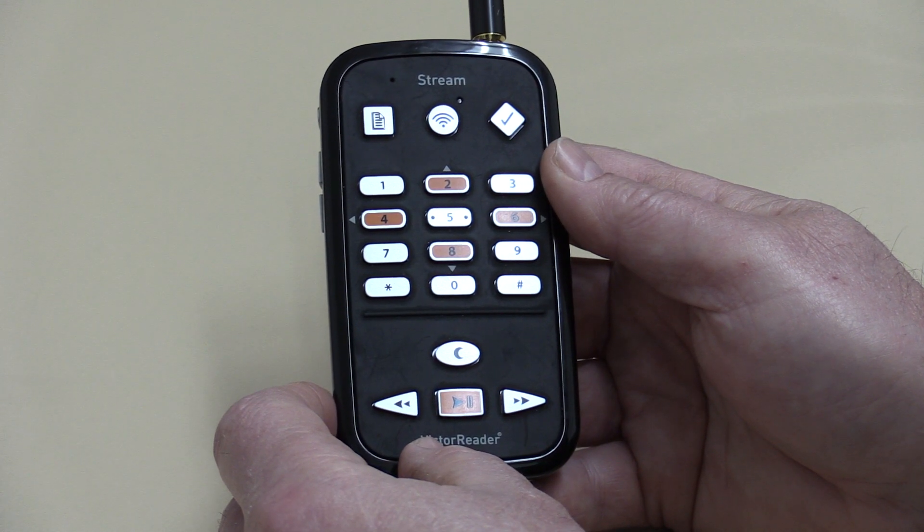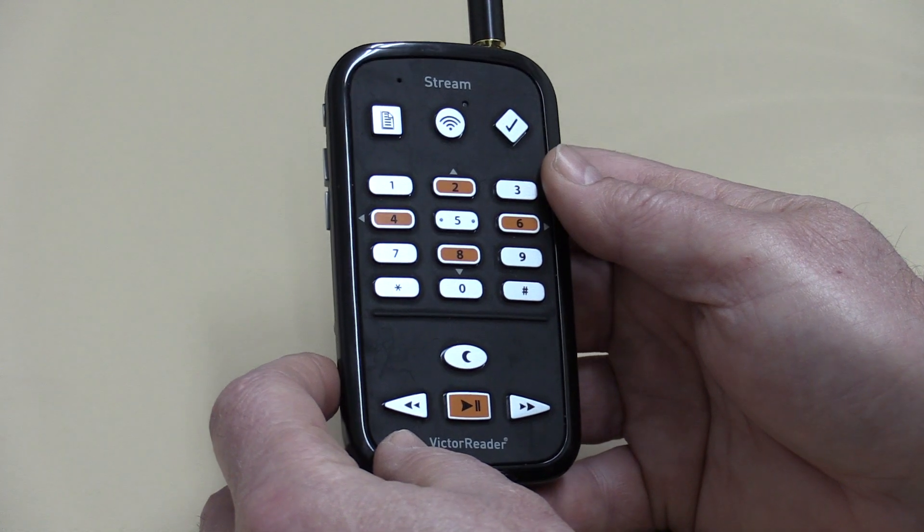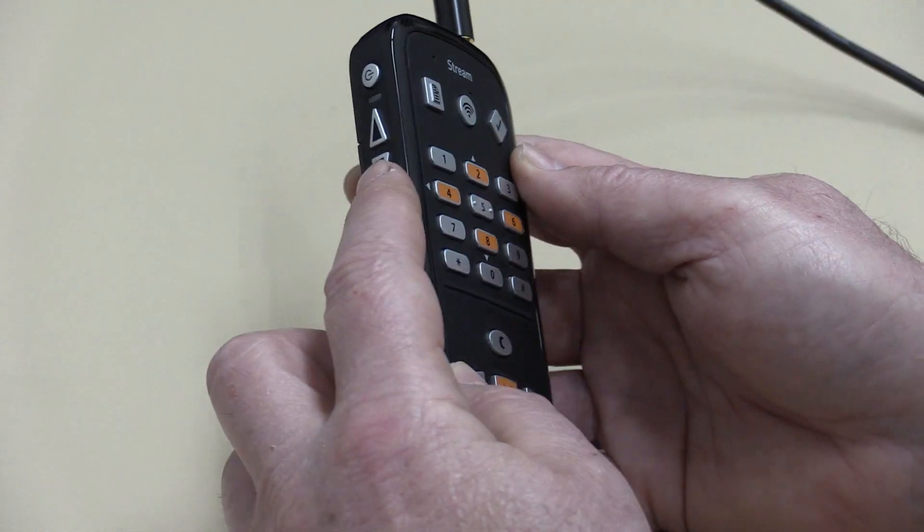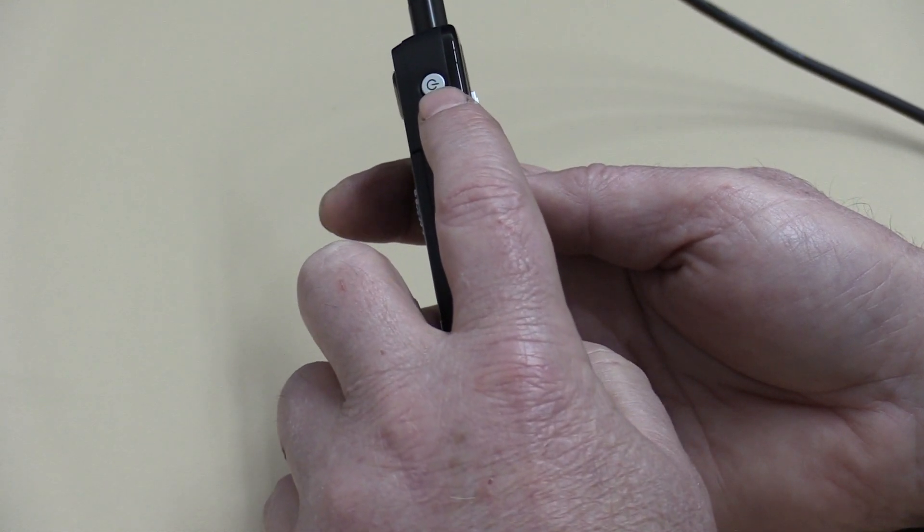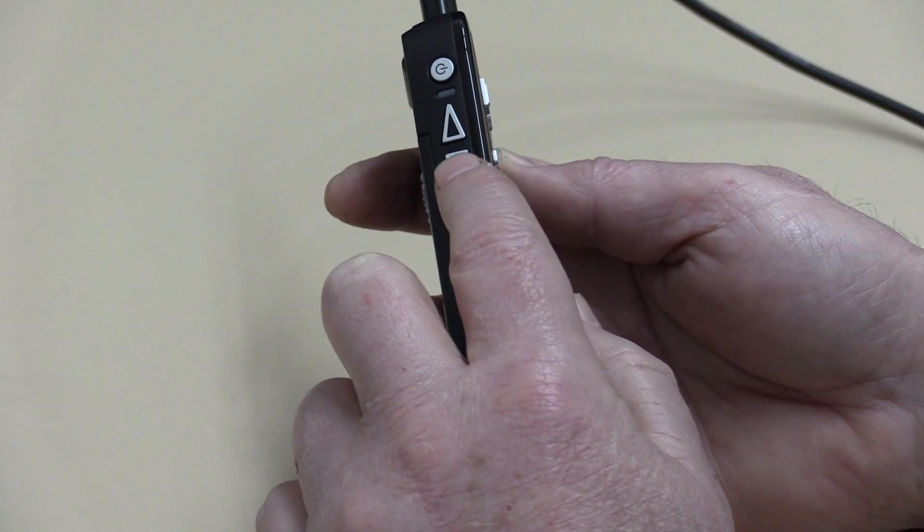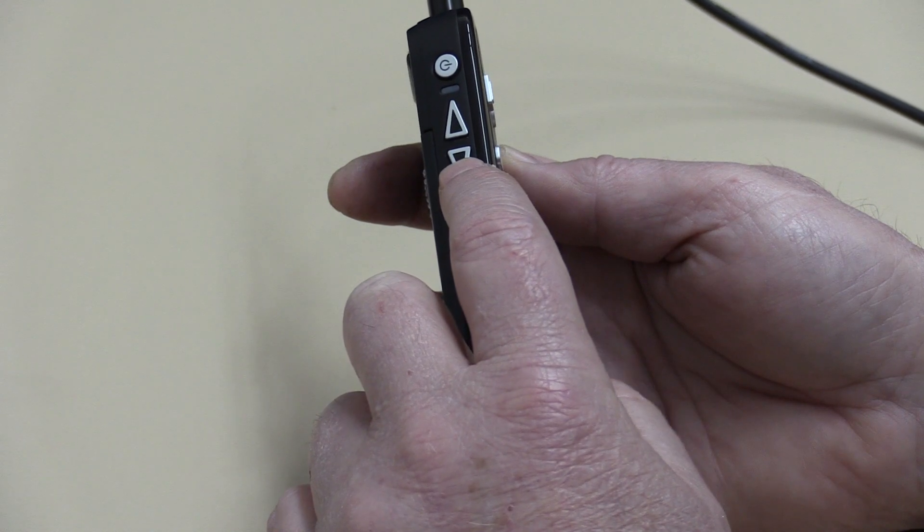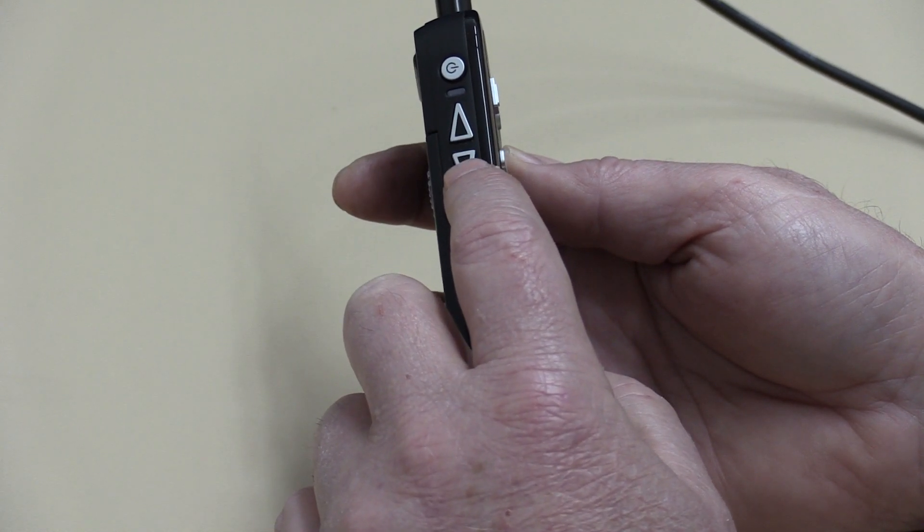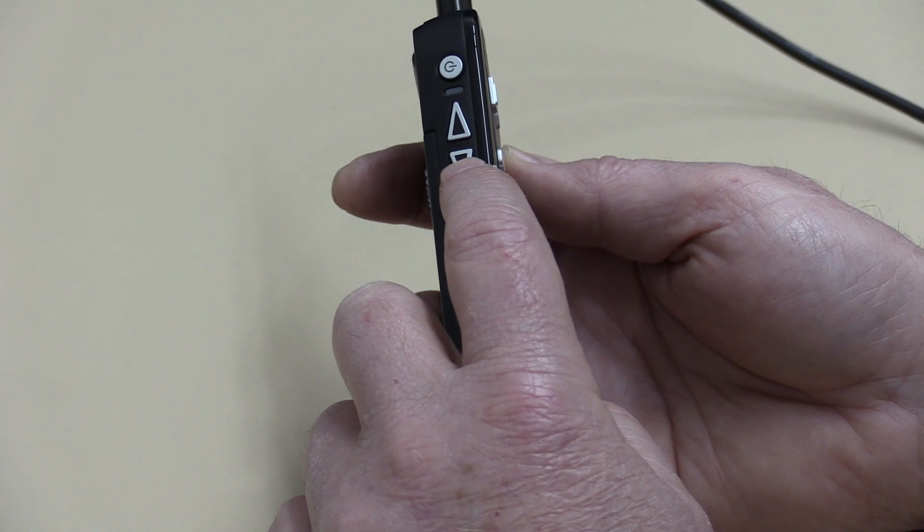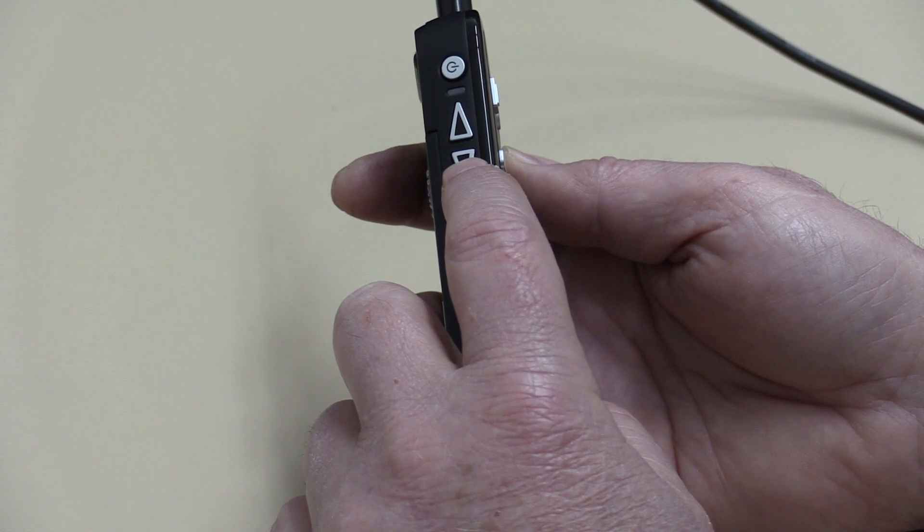Turning on your Victor Reader is a very simple procedure. If you turn it to the left side, you can see up the top there's a little round button. Underneath it there are two arrow keys, very similar to the ones that are on the rewind and fast forward on the bottom of the Victor Readers.